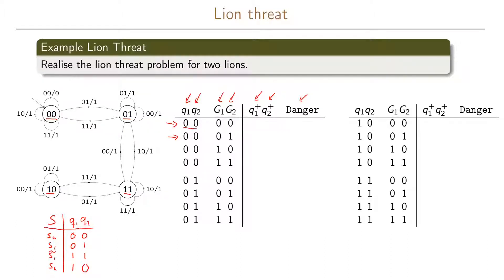We start in the state called 00 and look at input 00. We will stay in state 00 and danger will be zero. Next, staying in state 00 with input 01, we go to state 01 and have a one as output. With input 10 we stay in state 00 with a one as output. For input combination 11, we stay in the 00 state with output 1.